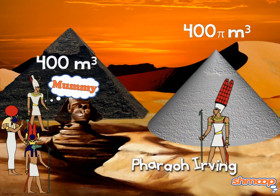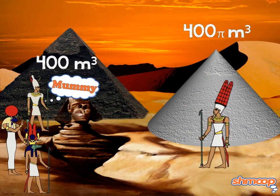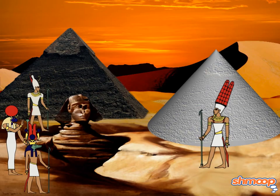Since 400 pi is bigger than 400, it looks like Pharaoh Irving is really going to be the one living the good life... uh... Afterlife.